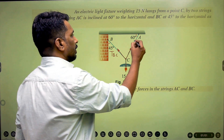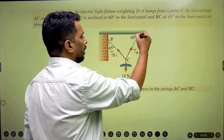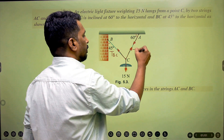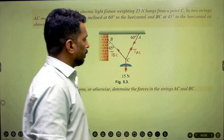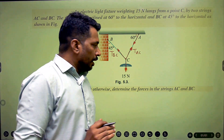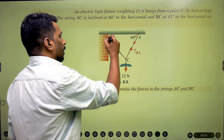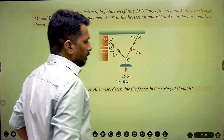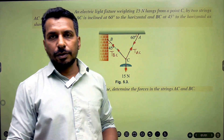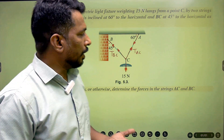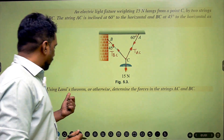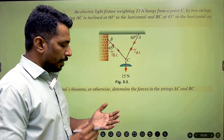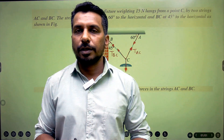If we consider point A, the tension TAC acts away from it — same magnitude but different direction compared to point C. At point B, there is only one force, tension TBC, with the same magnitude but in exactly the reverse direction. So we have to proceed with point C, because we get three forces acting at it forming a coplanar concurrent force system.